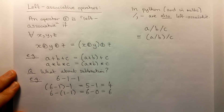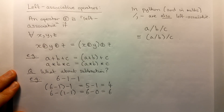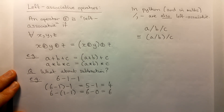In Python, addition, subtraction, multiplication, and division are all left-associative, which means that they are performed from left to right.